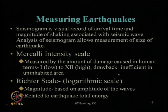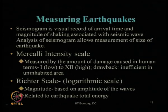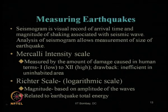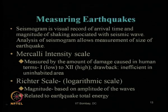Mercalli intensity scale 1 corresponds to lowest and 12 corresponds to highest, giving twelve sub-classifications to identify the Mercalli intensity scale. The drawback is that it is inefficient in uninhabited areas, because where there is no habitation, no people, no society is living, there is no observer and no human being who can report the amount of damage, because there is nothing to get damaged in those locations.